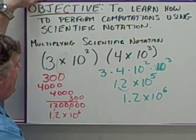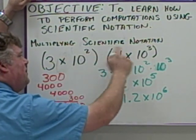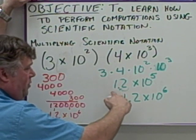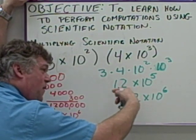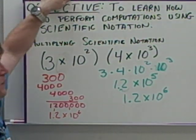So as it turns out, if you multiply the first factors and add the exponents to the 10, you can get your answer for the scientific notation. And the only thing you have to do is just make sure that the final answer is written in scientific notation by adjusting the first factor accordingly.